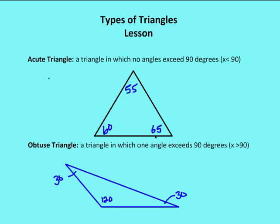An acute triangle is a triangle in which no angle exceeds 90 degrees, meaning all angles have to be less than 90 degrees — no angle can be equal to 90 degrees. For example, I have an acute triangle here with 60, 55, and 65 degrees. In an equilateral or equiangular triangle, all angles are 60 degrees, so an equiangular triangle is also an acute triangle.